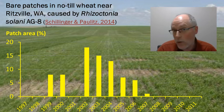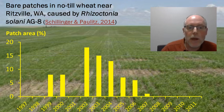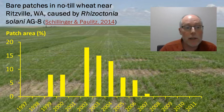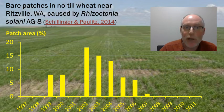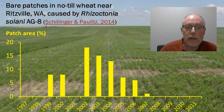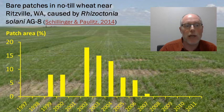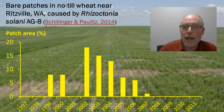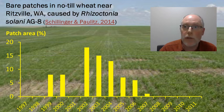The host, spring wheat, is still being grown. The pathogen, Rhizoctonia solanae strain AG8, is still present. But there's no observable disease. A microbial population has developed in the soil that inhibits the pathogen. It has become a suppressive soil.